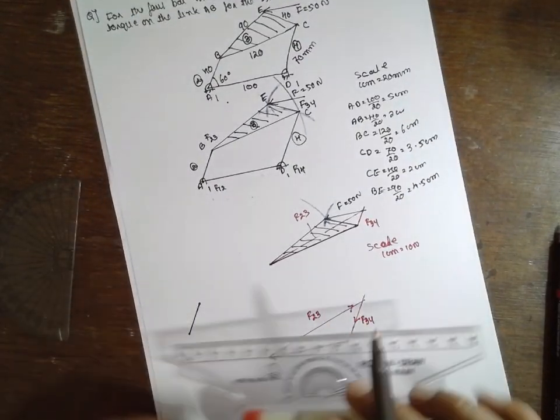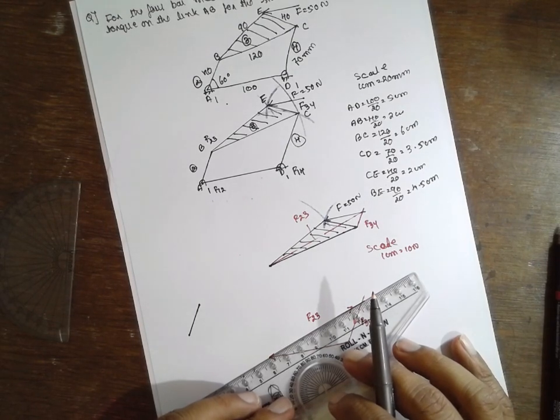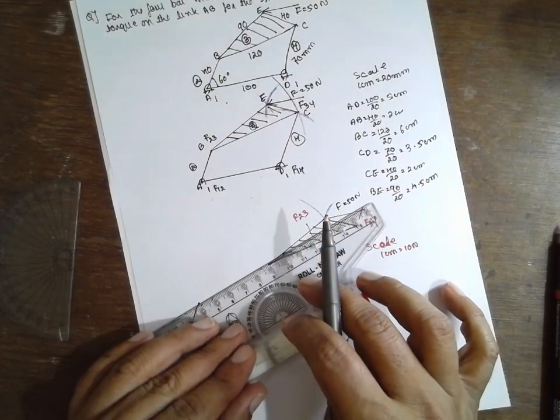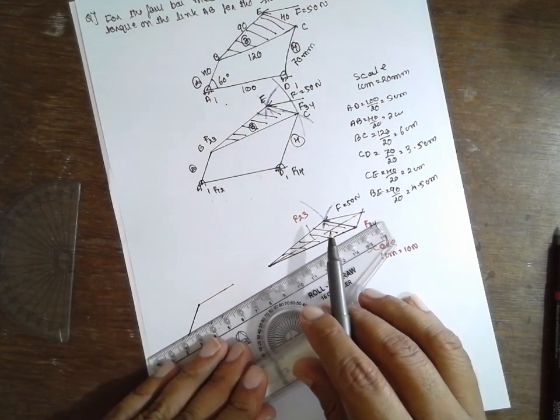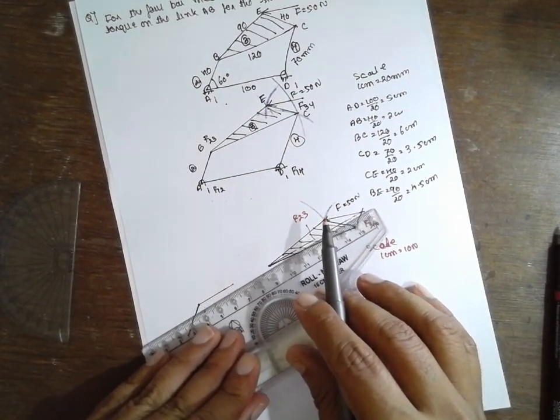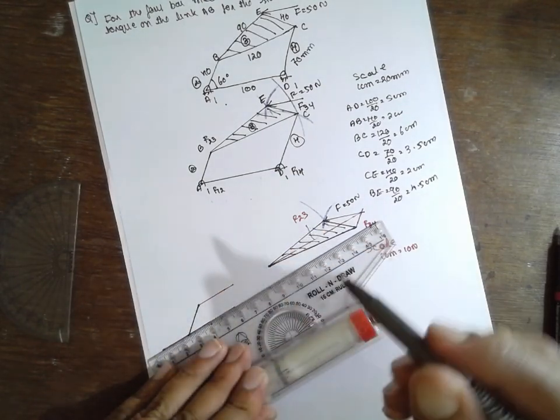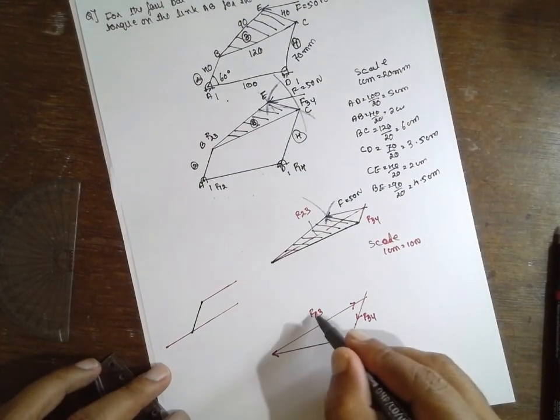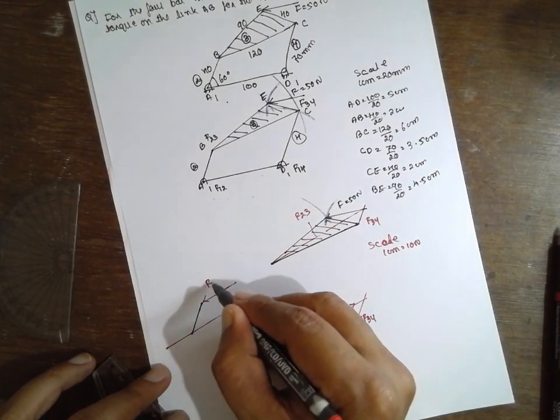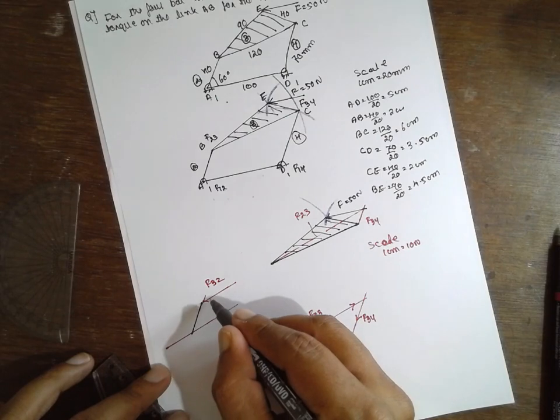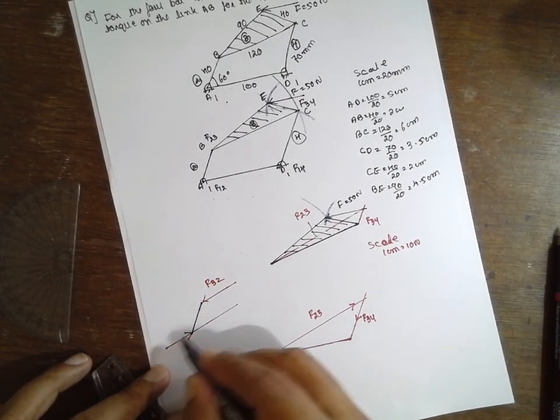Now, drop exactly parallel to here. If the force F23 is in this direction, the reaction will be F32 in opposite direction, in order to balance this one. This force will be in this direction, opposite to this one. This is F12.